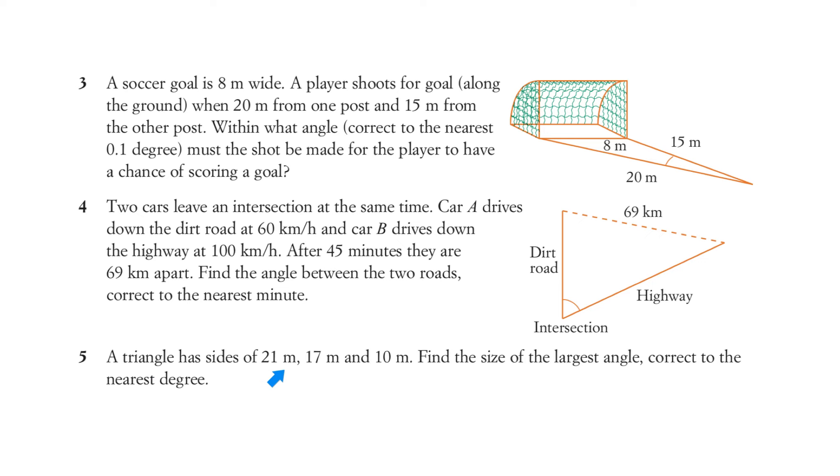Five. A triangle has sides of 21, 17, and 10 metres. Find the size of the largest angle correct to the nearest degree. Well, this is similar to the example that we looked at. Just roughly draw it. Use a straight edge, though, and draw the triangle.